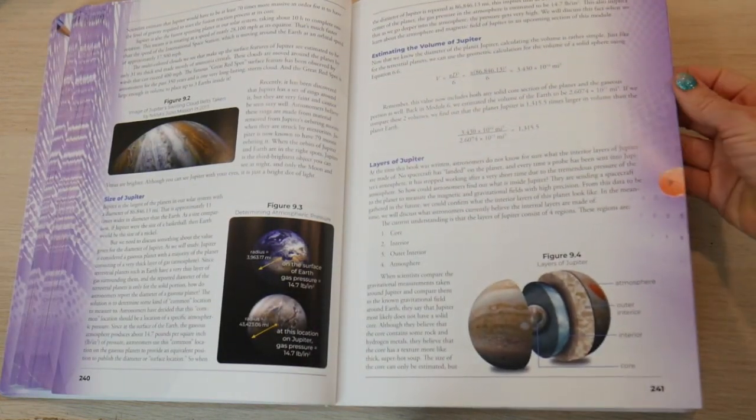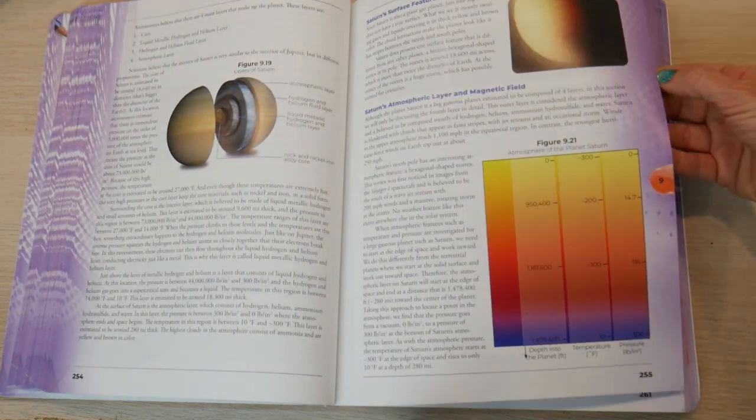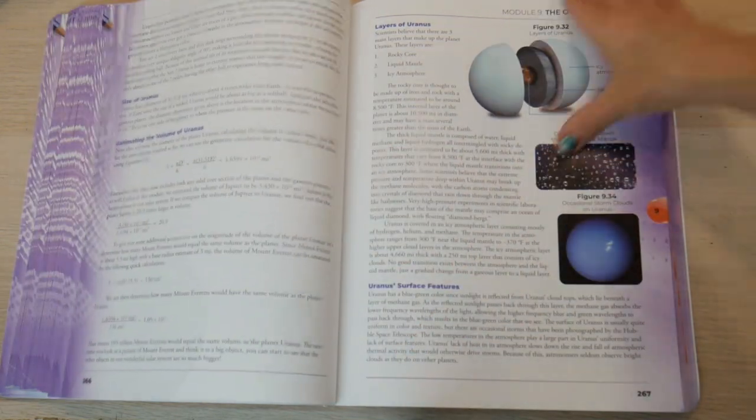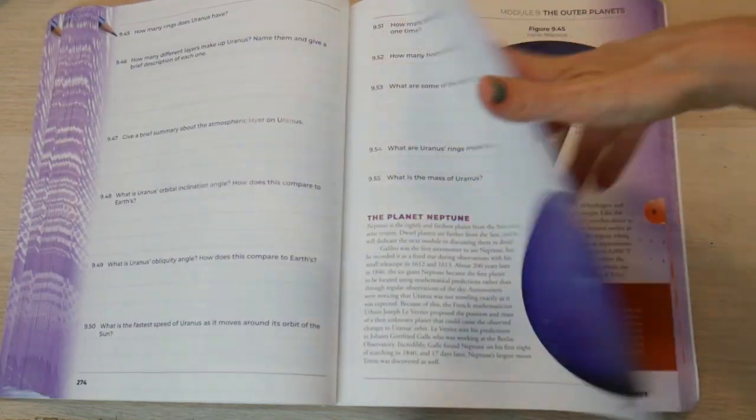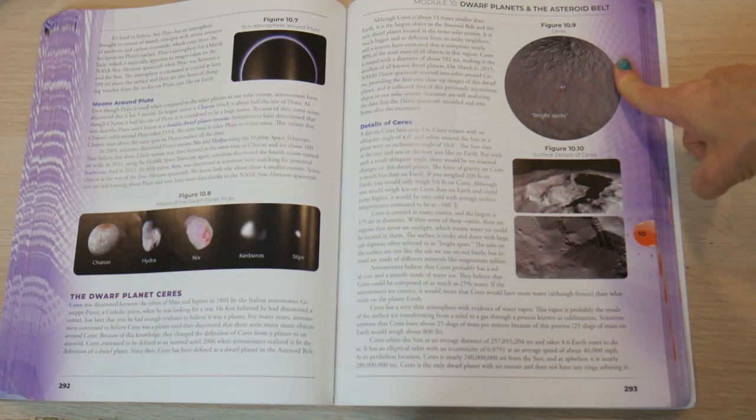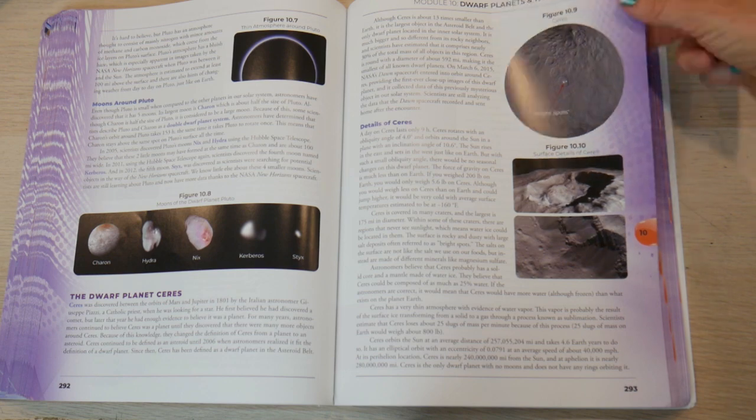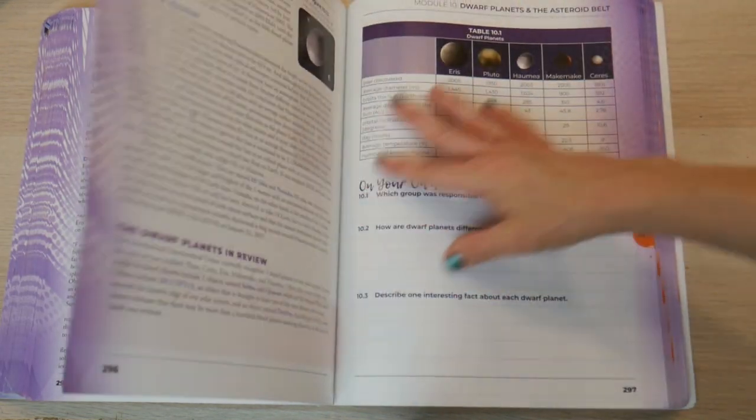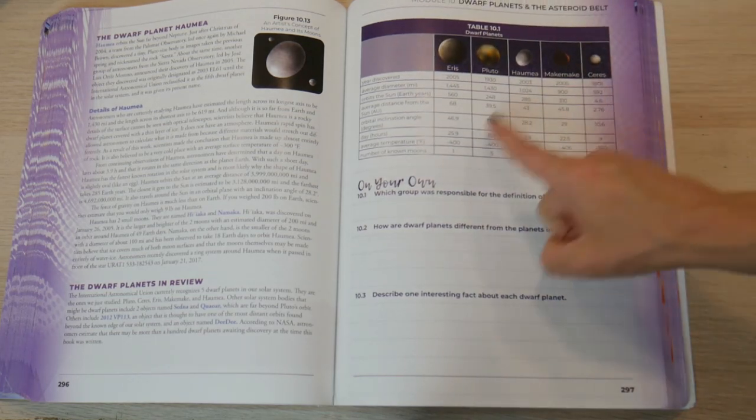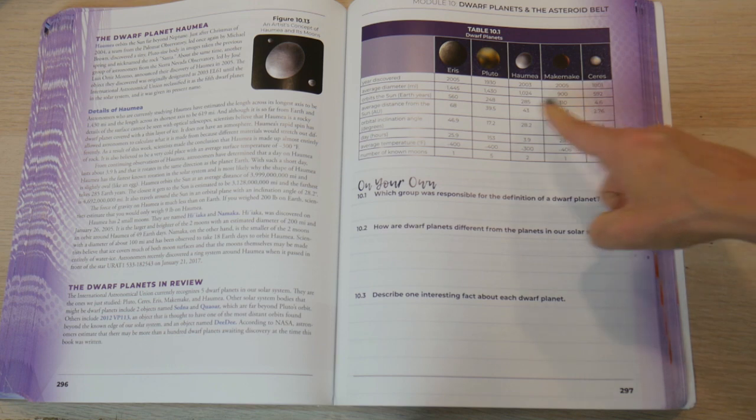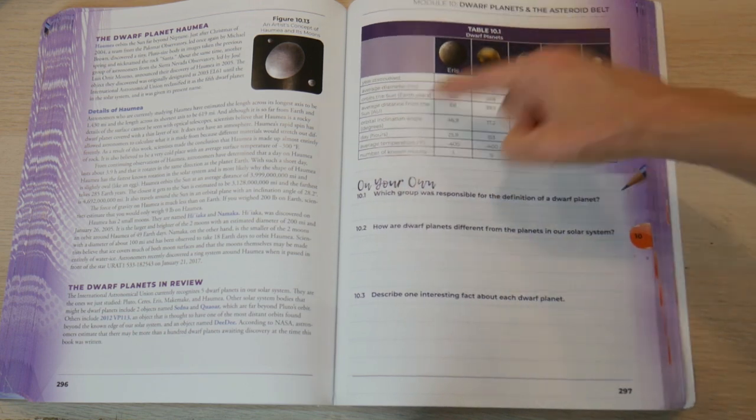And here's the next chapter on the outer planets, same kind of pattern as before. Then we get into the module about dwarf planets and the asteroid belt. So this is just a lot of information. And a nice little chart on all the different dwarf planets. Not all of them because obviously there's a lot of dwarf planets, but here are some that they have.